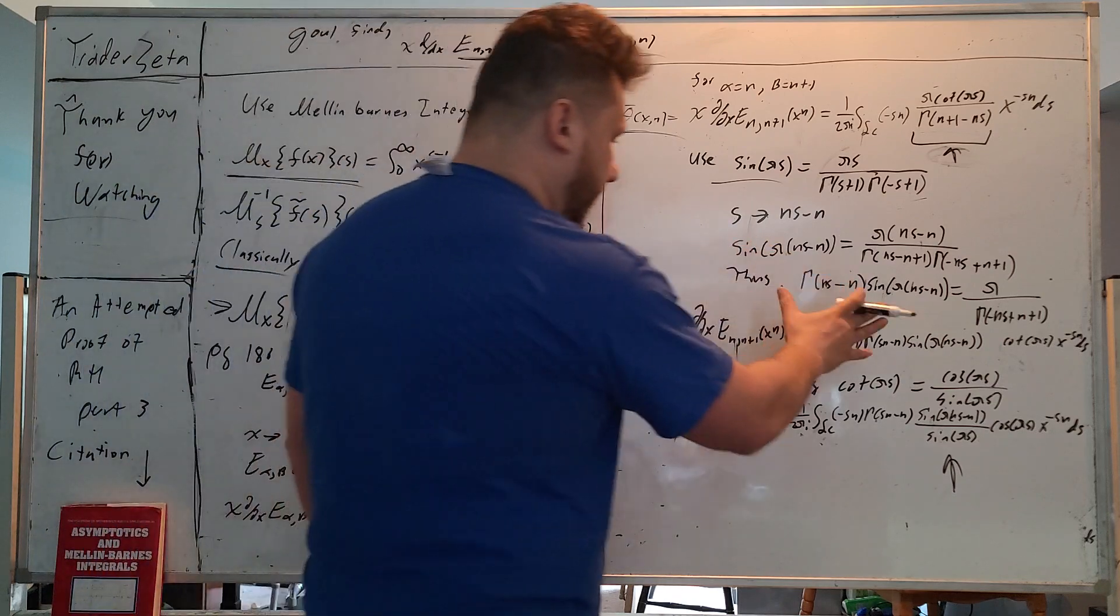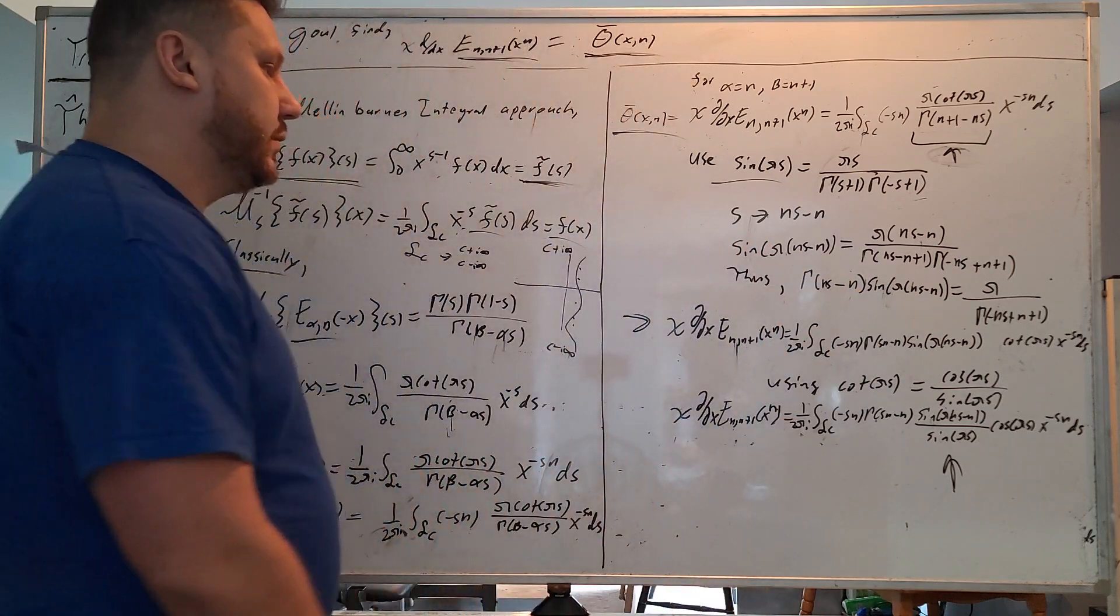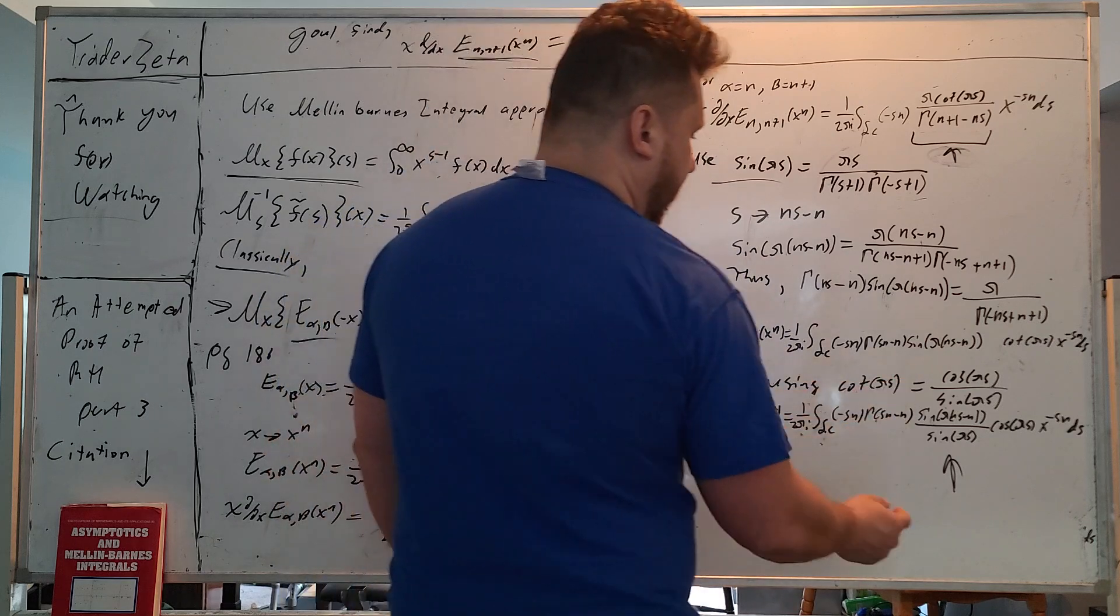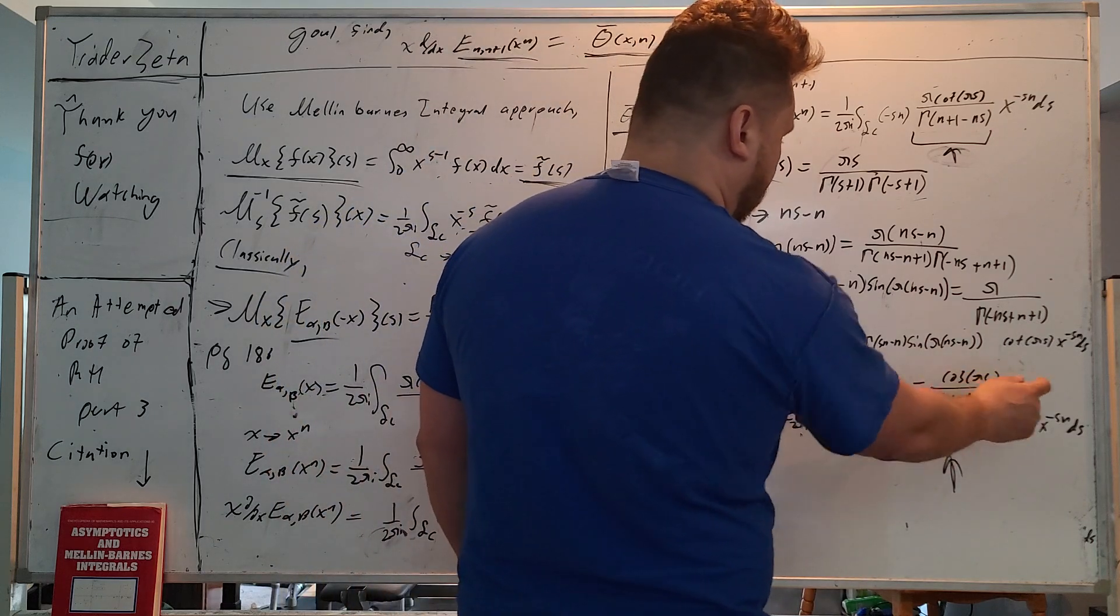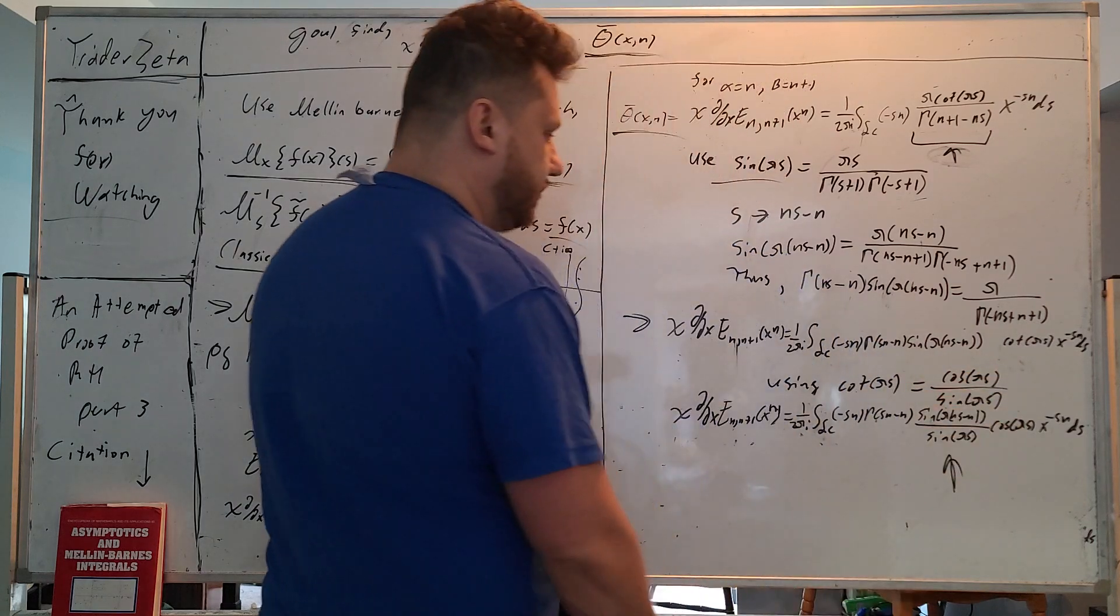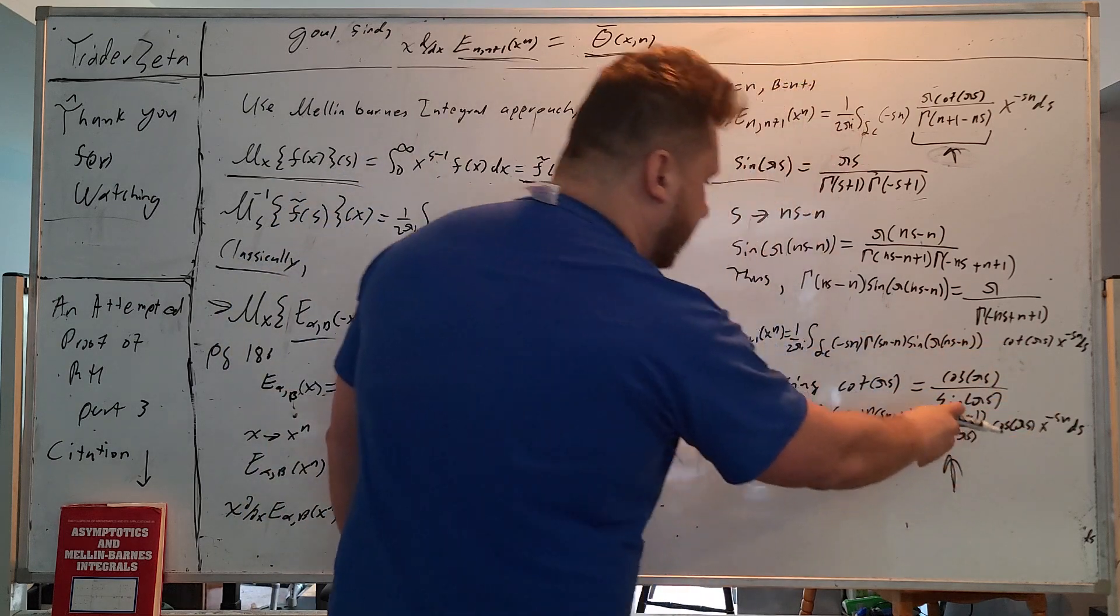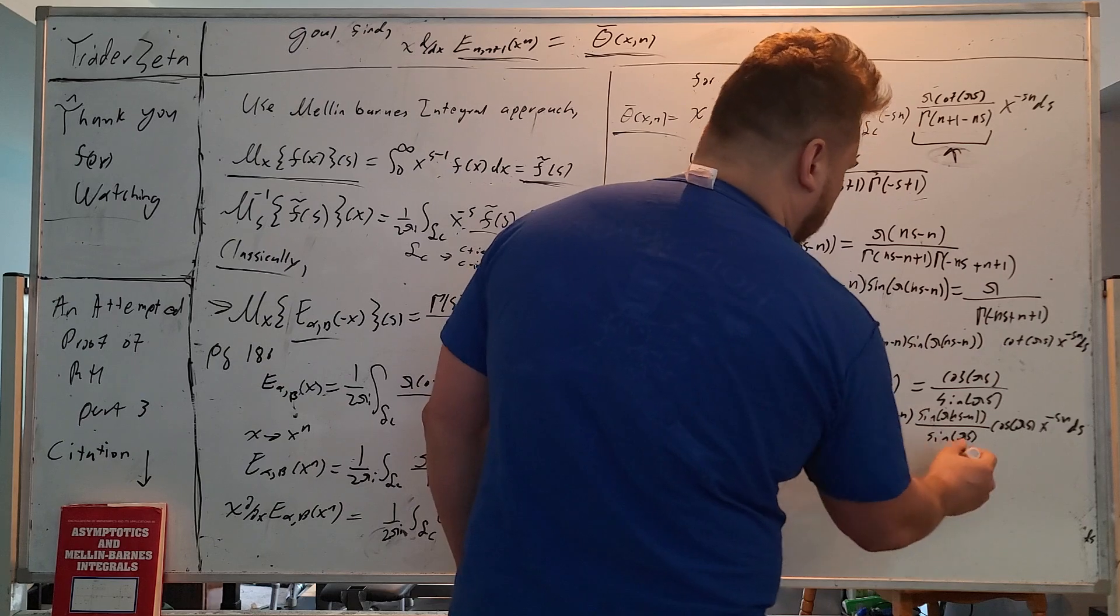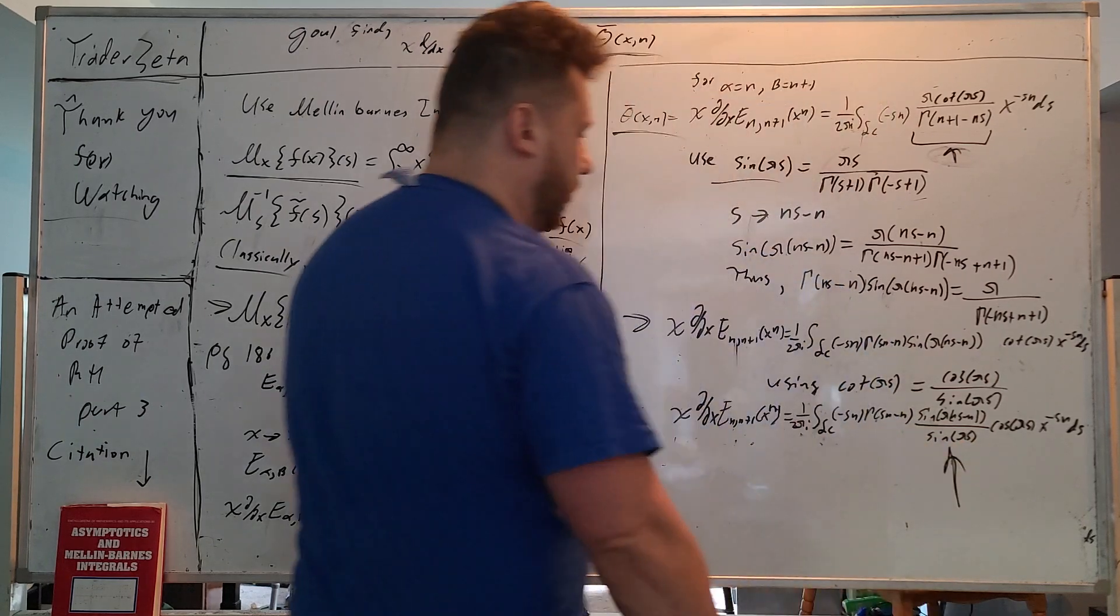This is really good in my opinion. Because we can use the definition of cotangent: cotangent pi s equals cos pi s divided by sine pi s. And we can move the sine pi s underneath here and we get this beautiful term right here.